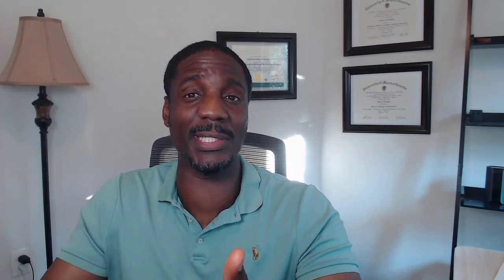One thing you'll notice about these major pairs is that they're all currencies against the dollar. We also have what they call cross-currency pairs, and these are just currency pairs that do not include the US dollar. Popular ones: euro sterling, euro yen, sterling yen.